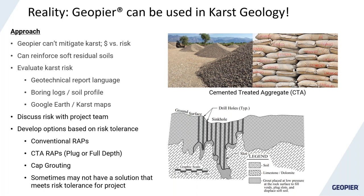We can use conventional wraps if the karst risk is low, which is the cheaper option. We can introduce cement treated aggregate — either for the full pier length or just a plug at the bottom — to prevent aggregate loss into solution channels and slow water introduction into the limestone. The most expensive option is cap grouting, placing an impermeable layer at the top of the limestone to prevent water flow. Sometimes we don't have a good solution if the risk is too high, but bottom line: yes, we can handle karst sites.